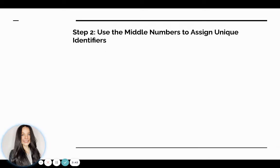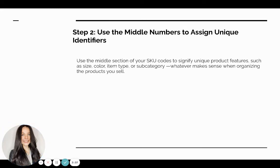The next step is to use the middle numbers of your SKU to identify unique identifiers. These are going to be subcategories — whether that be size, color, department, supplier — whatever makes sense for your business.